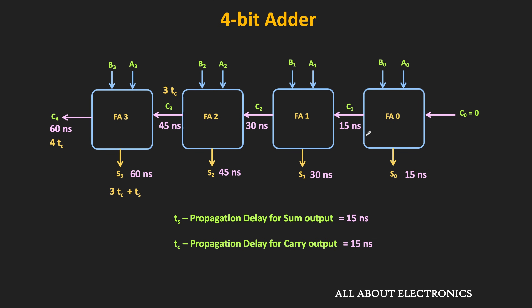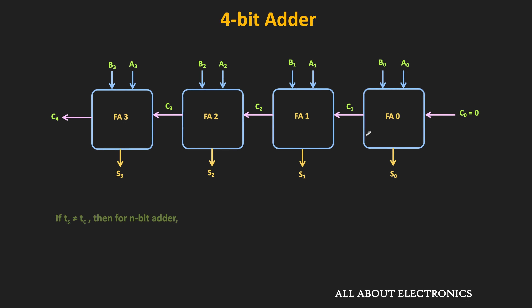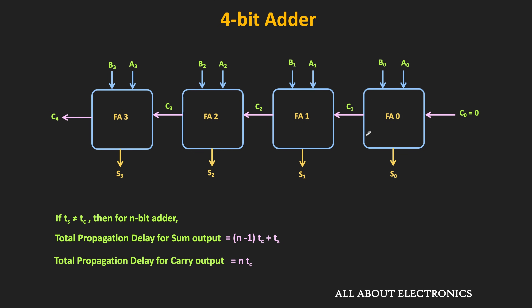In general, the full adder at the MSB position has to wait until (N-1)×Tc time. After that it generates the carry output at N×Tc time and the sum output at (N-1)×Tc + Ts time. For an N-bit adder, when Tc ≠ Ts, the time required to generate the valid sum output is (N-1)×Tc + Ts, and the total propagation delay for generating the carry output is N×Tc.